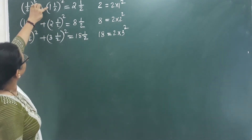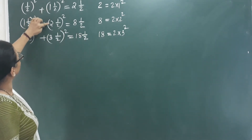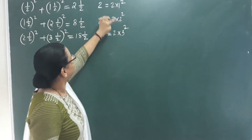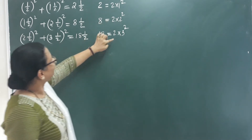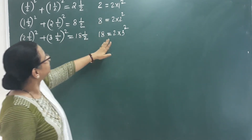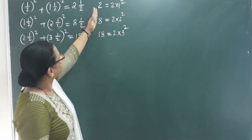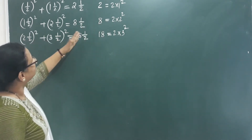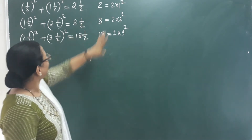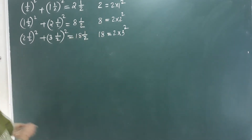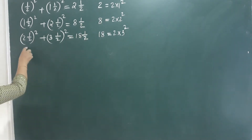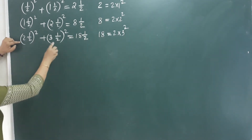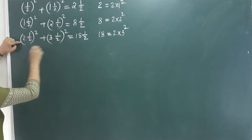Look at this pattern: 1, 2, 3. Here 2 is common. The results are 2, 8, 16. Then for 1 and a half, if you want to find another number, you can fill it. For 3 and a half squared, what is the next number? 4 and a half squared.